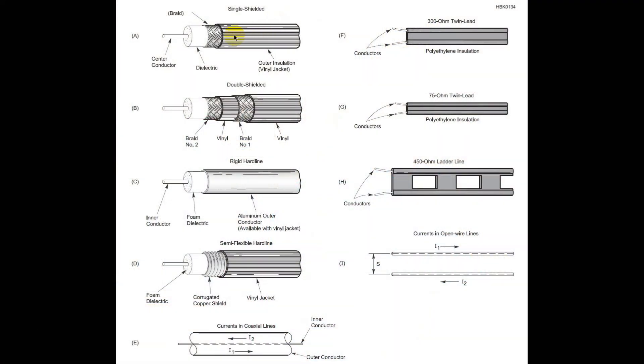So the first we want to talk about is a classic type, single shielded. This has a center conductor which is either solid or stranded. There's a dielectric of some kind, a plastic. There are all different kinds of plastics that you can use, and braid that goes all the way around it. This is classic, this is what I grew up with.